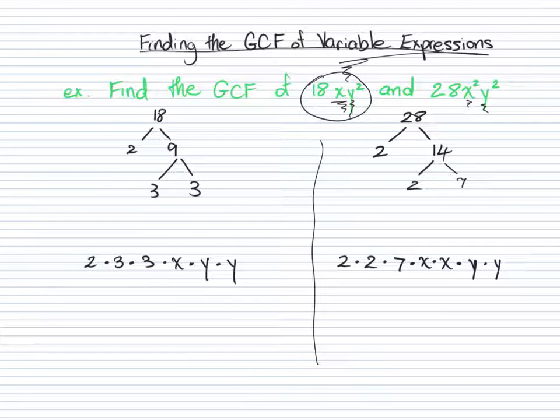Now when we're ready to write the GCF, we look at what both lists have in common. So there's one 2 on the left and one 2 on the right. So they have that in common. So I'll go ahead and circle that.